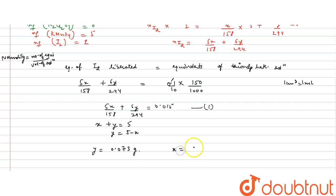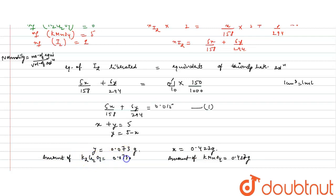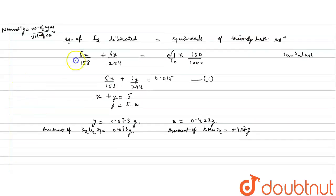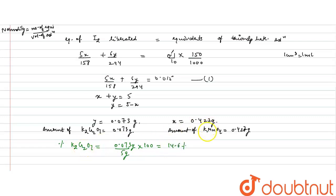So x = 0.427 grams (mass of KMnO₄) and y = 0.073 grams (mass of K₂Cr₂O₇). The percentage of K₂Cr₂O₇ = (0.073 / 0.5) × 100 = 14.6%. Similarly, the percentage of KMnO₄ = (0.427 / 0.5) × 100 = 85.4%.